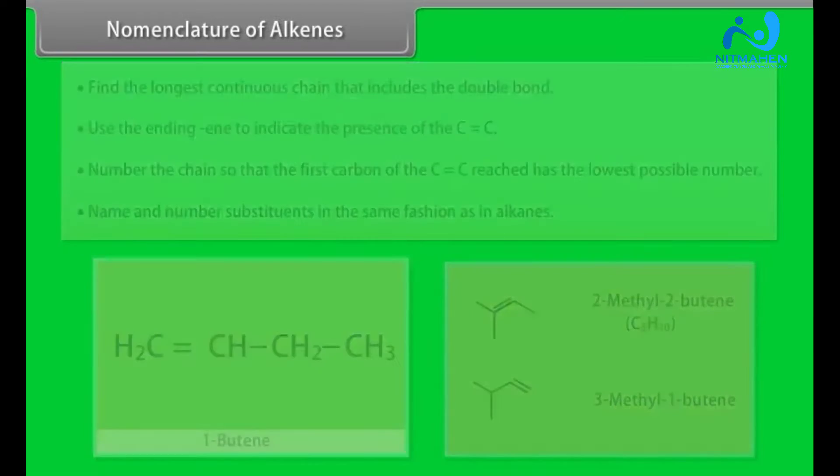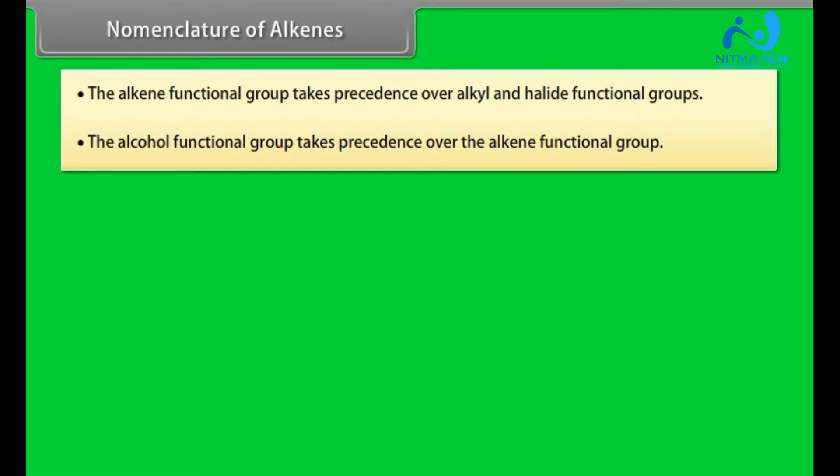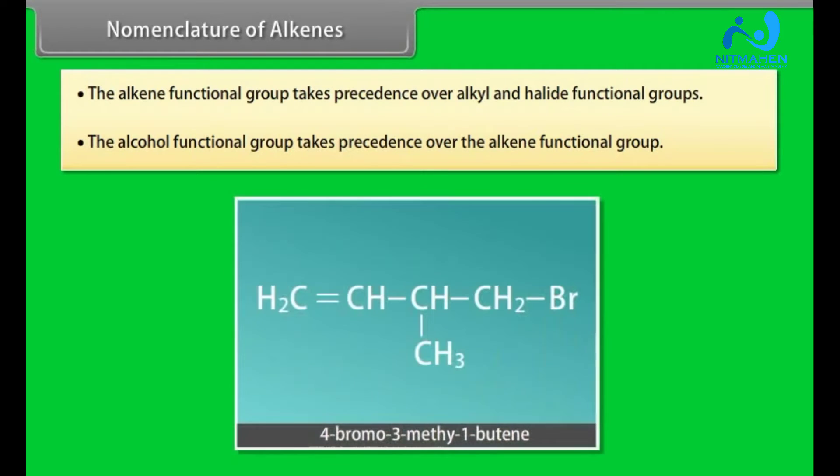Step 5: The alkene functional group takes precedence over alkyl and halide functional groups. Step 6: The alcohol functional group takes precedence over the alkene functional group. 4-bromo-3-methyl-1-butene.